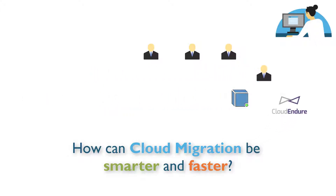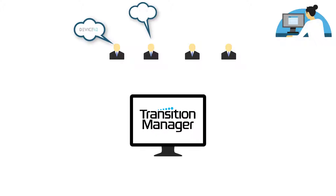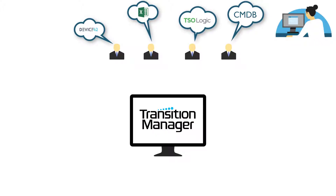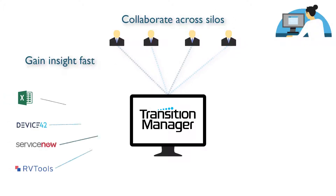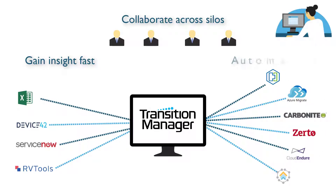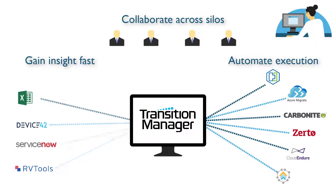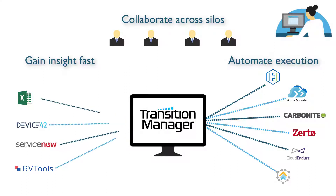Now, there's a new way. Transition Manager automates the gathering of only the data you need for your project and ties necessary business factors to each application, which means you can build the rules for how to handle each application from end to end, and automate at scale. The result? A faster process which blends human intelligence with powerful automation and reduces both risk and cost.